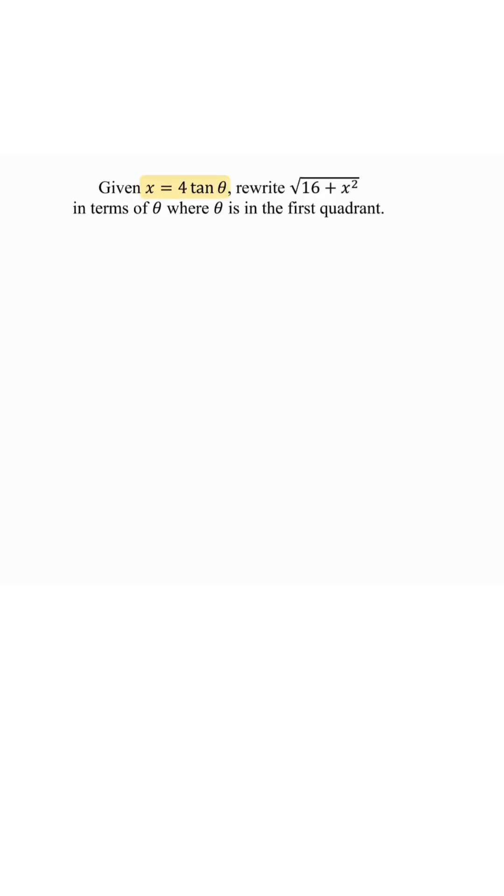Since the square root of 16 plus x squared needs an x squared, we're going to take this x and square both sides to get x squared equals 16 tangent squared theta. Then from the square root of 16 plus x squared, we substitute that x squared and factor out the 16. So we have square root of 16 times the quantity 1 plus tangent squared theta.